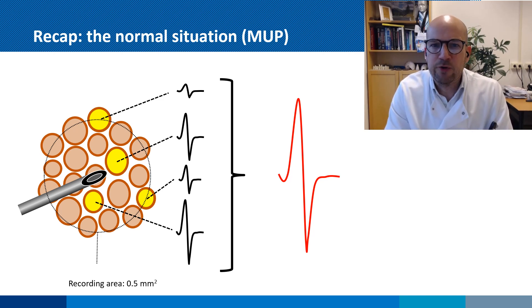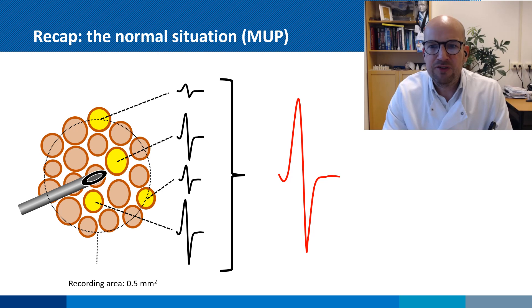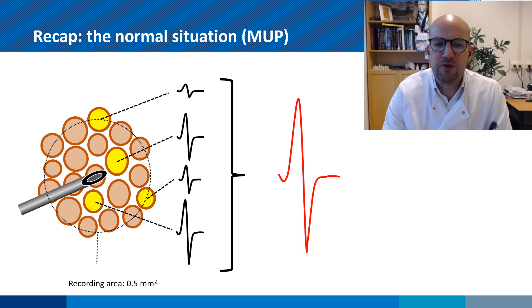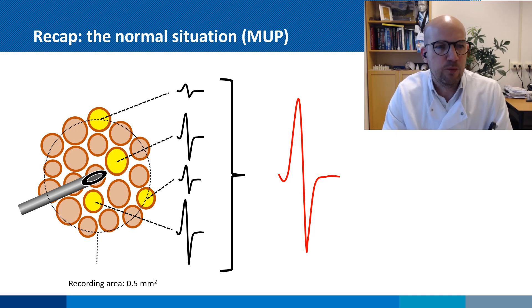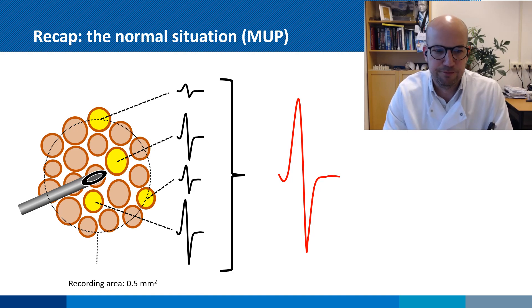I will now show you what a normal EMG looks like. Have a look at the morphology of the motor unit potential, see if you can recognize and distinguish different motor unit potentials. Also try to evaluate the recruitment pattern at the end of the video, when the patient is asked to apply a bit more force and the screen fills with a large number of MUPs.